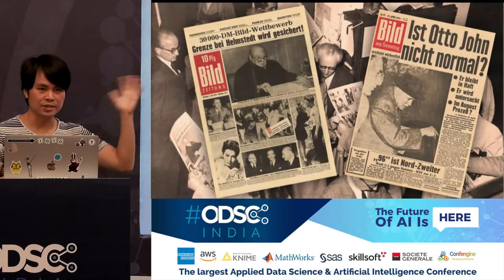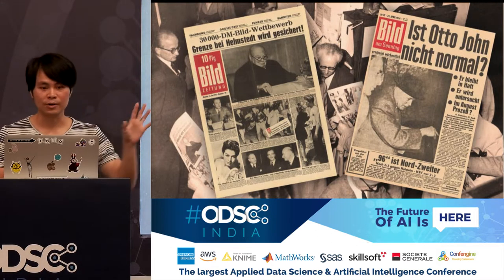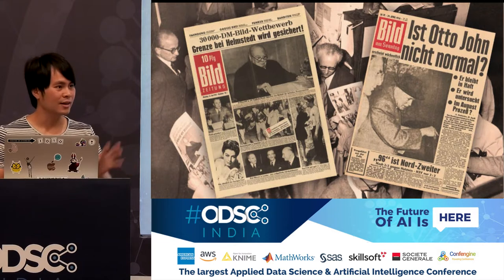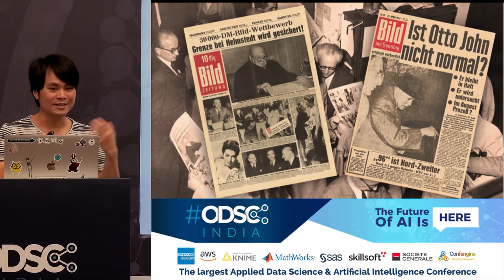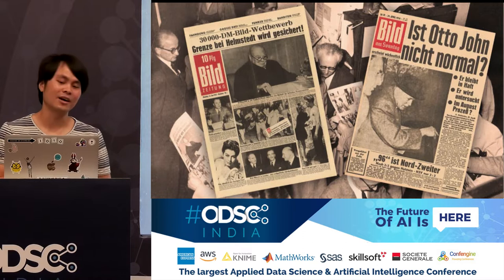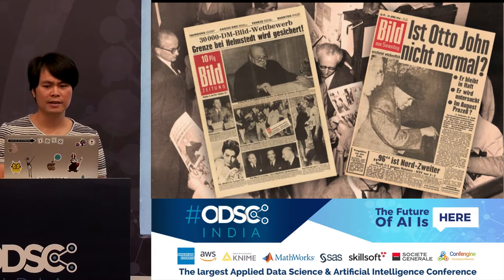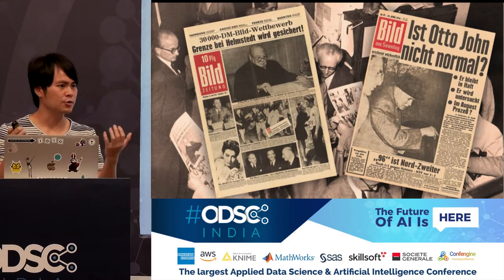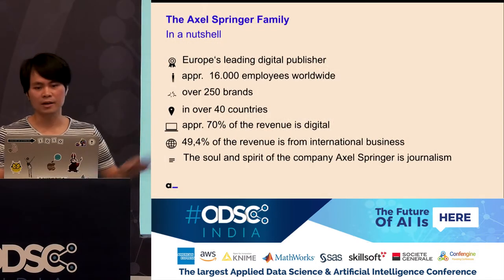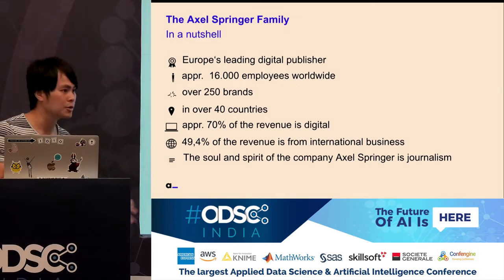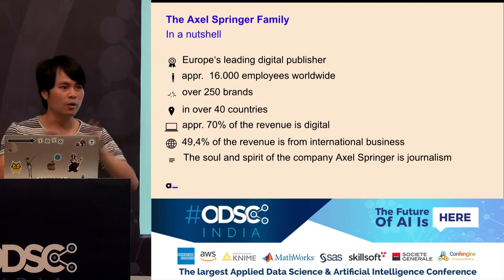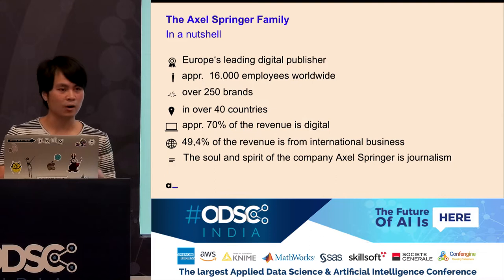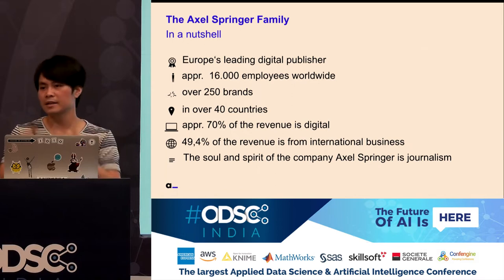For motivation, I want to start with the company itself. This is Bild — a very popular tabloid newspaper in Germany, founded in 1952. Since then we've changed. We are Europe's leading digital publisher with approximately 60,000 employees. We have 180 brands and are in over 40 countries. Our main business is still journalism, but we also have a lot of other businesses like classifieds and price comparison.